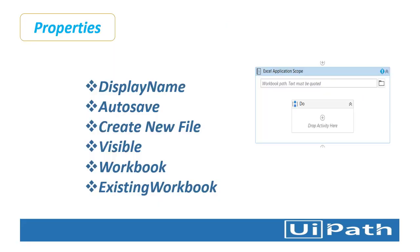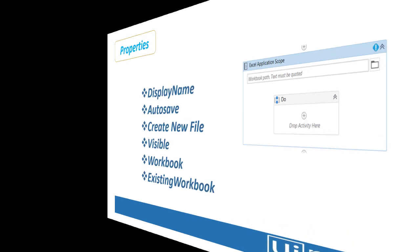Now let's look at the different properties available for Excel Application Scope. The first one is display name, then auto save, create new file, visible, workbook, and existing workbook. Along with these important properties, we also have edit password, password, and read only. These are the main properties we have with Excel Application Scope.